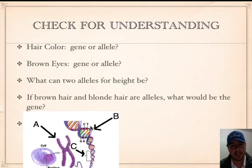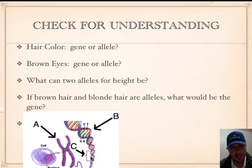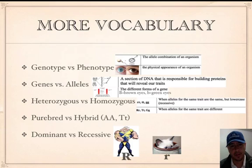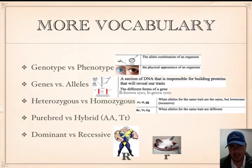Let's label A, B, and C. If you said A is the chromosome, you are correct. C is the gene — the section of DNA controlling your trait. And B is all pointing to DNA.